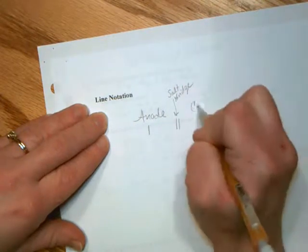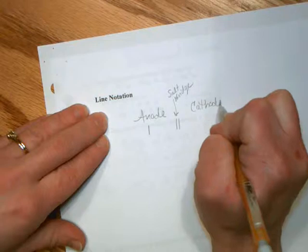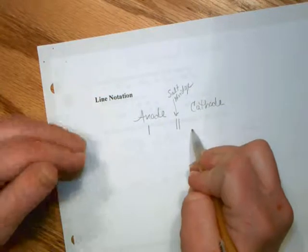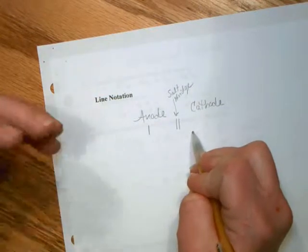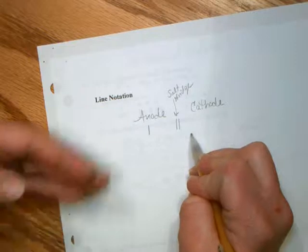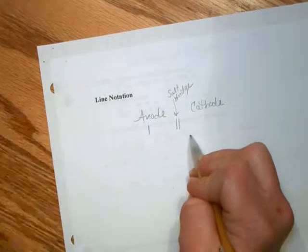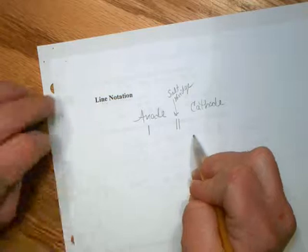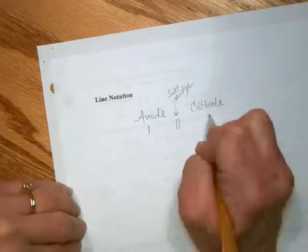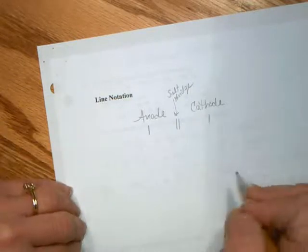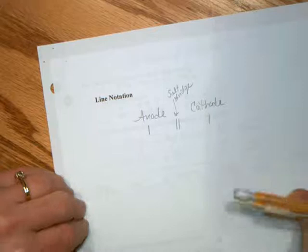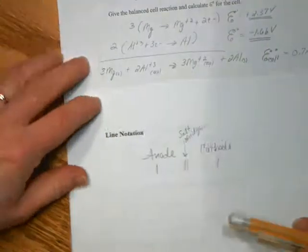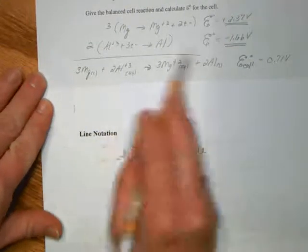And then we'd have the cathode, which would be the same, meaning in designation, if you have more than one species in the same phase, all aqueous, you would have commas. If they're in different phases, you would have them separated by a single vertical line. So can we look at how we would do the line notation for this galvanic cell?